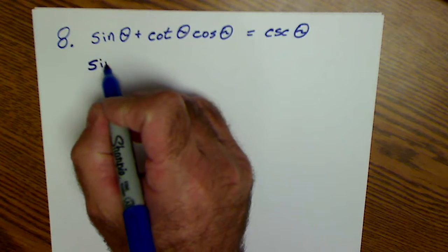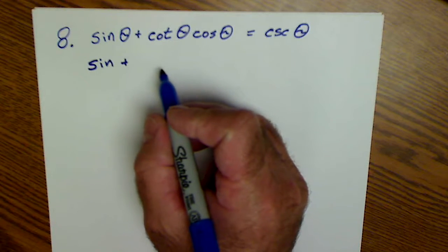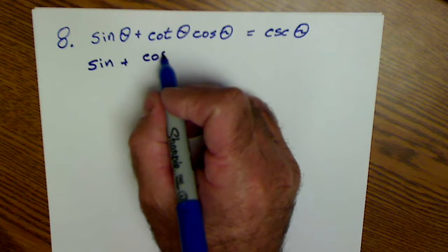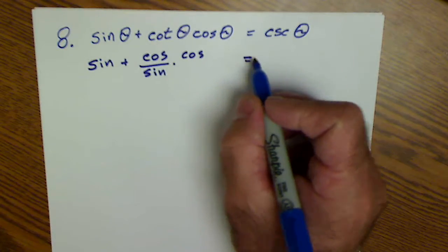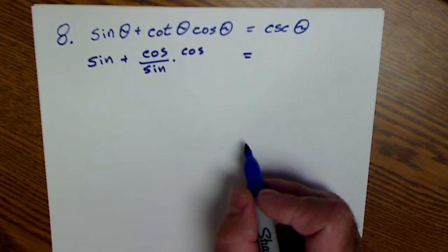So I have that here. This is sine. Cotangent is cosine over sine. And I'm going to keep cosine as it is. I keep my equal sign working all the way down.